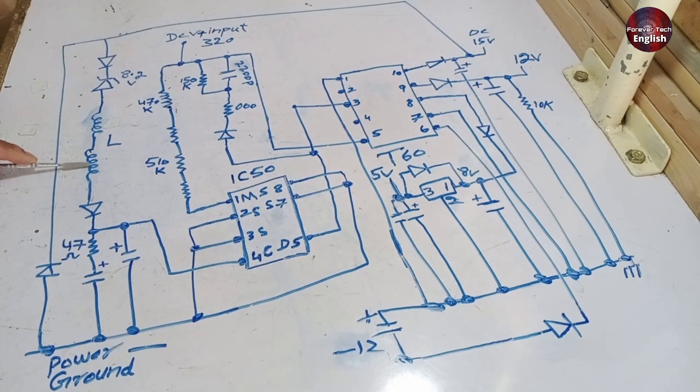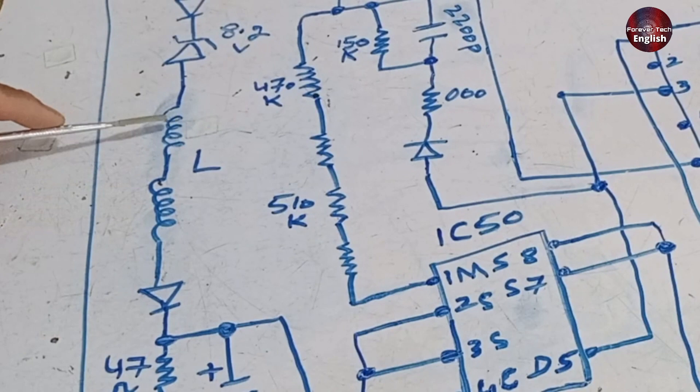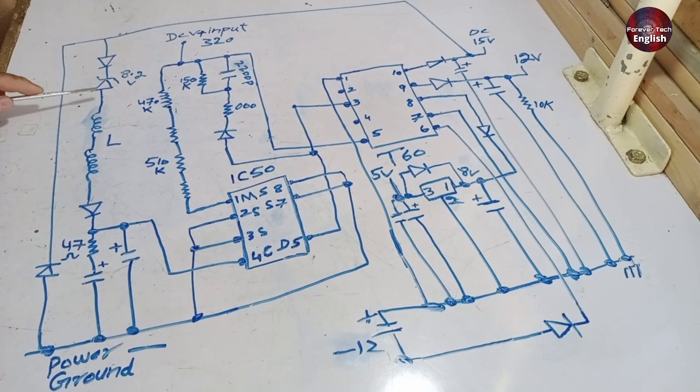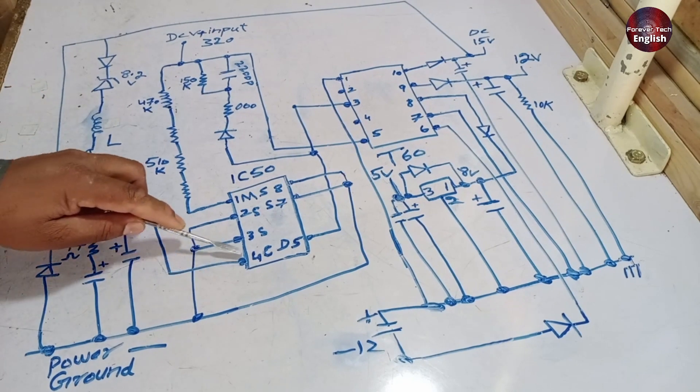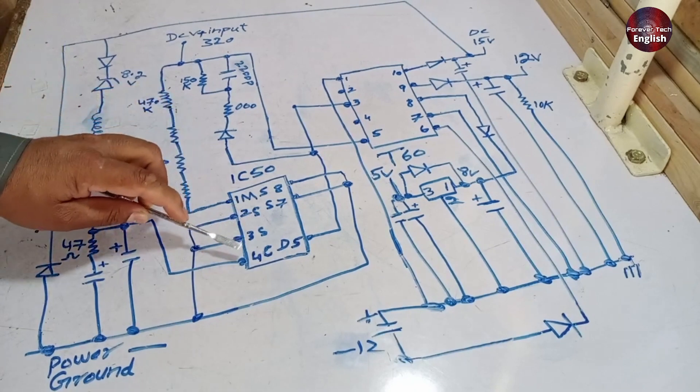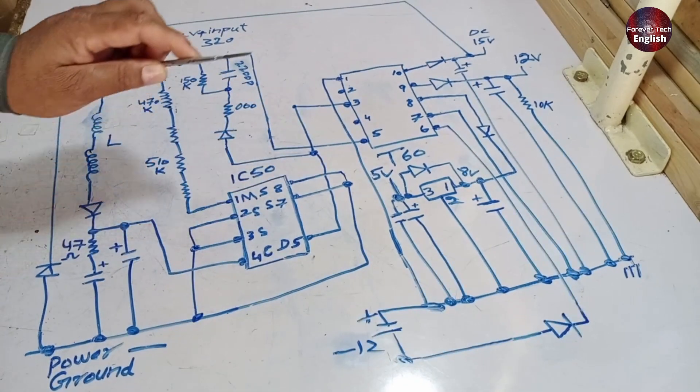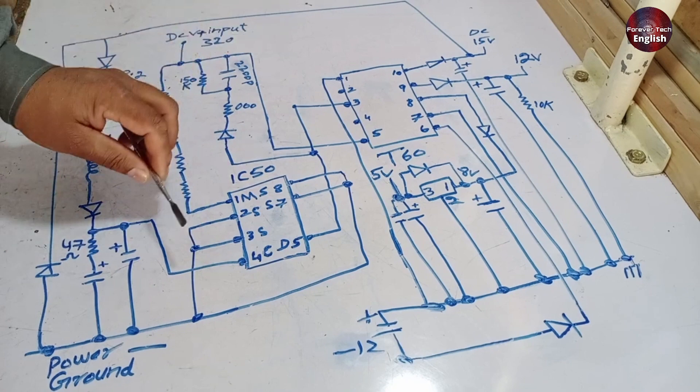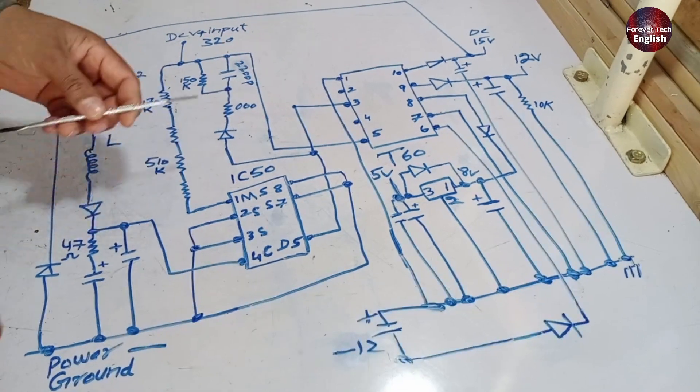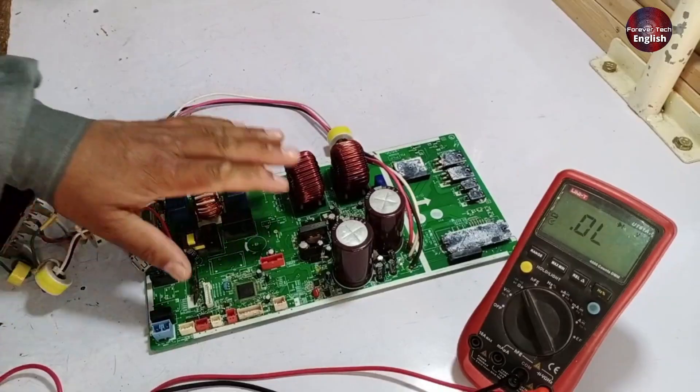Two inductors are installed here to filter out any spikes or noise. Any such disturbances will be filtered by the inductors and then reach the diode. The diode is also installed for safety, and a capacitor is used to further filter out spikes. From here, the 8.2 volts will go to the control pin, which is pin number 4. When these voltages reach pin 4, the system becomes stable. At this point, the SMPS system activates the other components, including the microcontroller, and the system starts functioning properly.